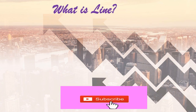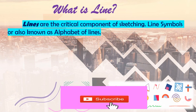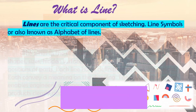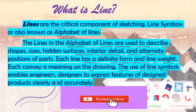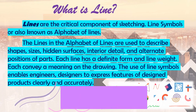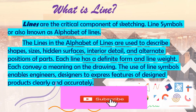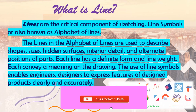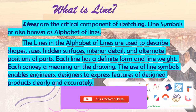Let us begin with the line. What is line? Lines are the critical component of sketching. Line symbols are also known as the alphabet of lines. The lines in the alphabet of lines are used to describe shapes, sizes, hidden surfaces, interior detail, and alternate positions of parts. Each line has a definite form and line weight, and each conveys a meaning on the drawing. The use of line symbols enables engineers and designers to express features of design products clearly and accurately.